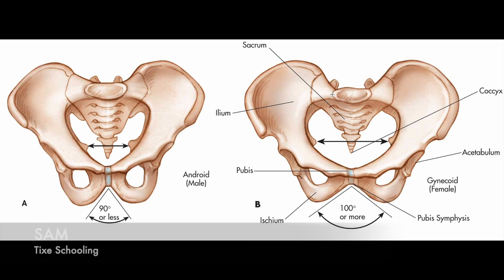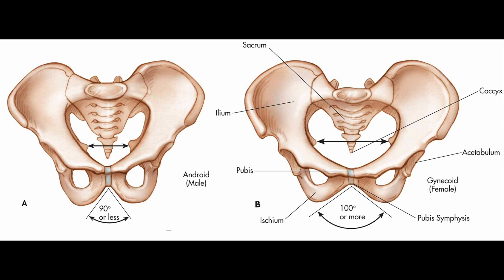Hello YouTube, this is Sam from Tyg's Schooling. In this session, we are going to talk about the sex differences of the pelvis in females and males. We'll be understanding the differences using this diagram. Remember, the sex differences of the bony pelvis are easily recognized. The more obvious differences result from the adaptation of the female pelvis for childbearing, and stronger muscles in the male are responsible for thicker bones and more prominent bone markings.